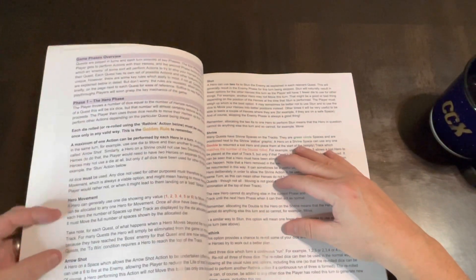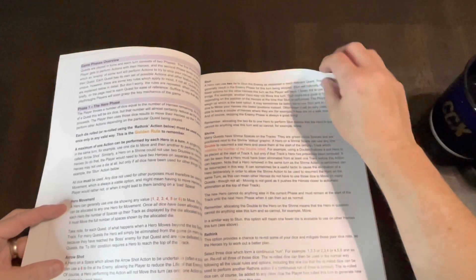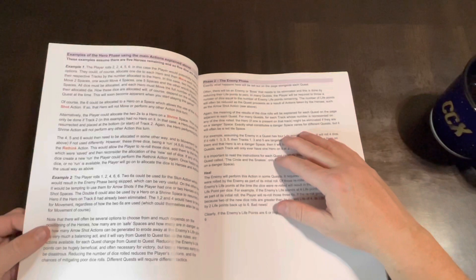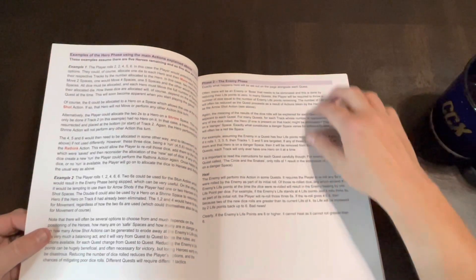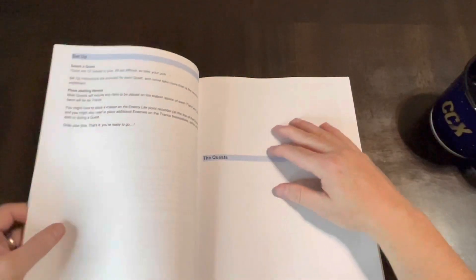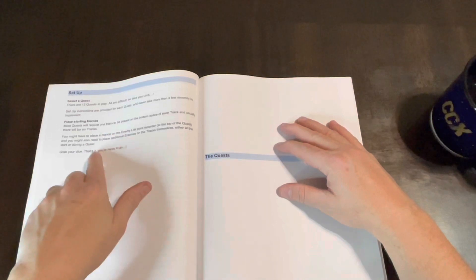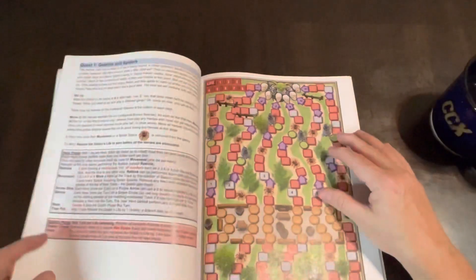Here's talks about the quests, game phase overview. Here's phase one, the hero phase: hero movement, arrow shot, stun, shrine, rethink. Here's example of the hero phase and then you got the enemy phase. So not a lot there right there.